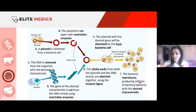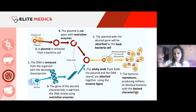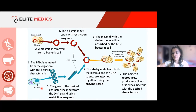The sticky ends from both the plasmid and the DNA strand are attached using ligase. The plasmid with the desired gene is then absorbed by the host bacterial cell. Bacteria have the ability to replicate very rapidly, producing millions of identical bacteria with the desired characteristic. To summarise: we find the gene for our desired characteristic, cut it out with restriction enzymes, and prepare a plasmid.